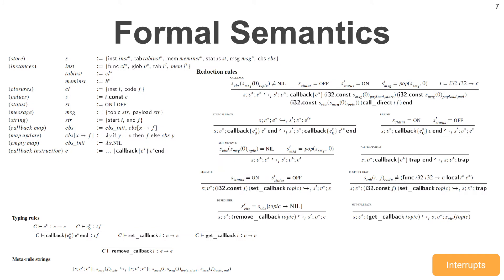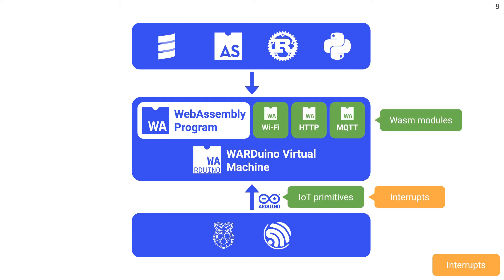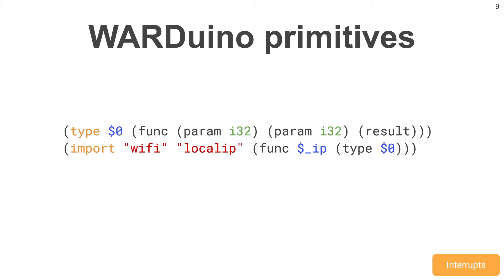Our paper contains the complete formal description of the system. This means we have now solved the first problem, which is to support interrupts. With this, we can now add WebAssembly modules to the Arduino virtual machine that expose specific IoT functionality. Whether it is to connect to a Wi-Fi network or use MQTT to communicate over the internet, these modules can now use interrupts to implement their functionality efficiently. For instance, the Wi-Fi module may include a primitive to retrieve the local IP address of the embedded device. In WebAssembly, this function will look as follows.